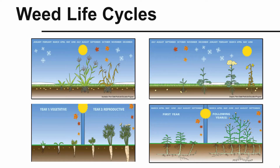So there you have it — the four life cycles of weeds: the summer annual, the winter annual, the biannual, and the perennial. It's worth noting that only broadleaf weeds exhibit the biannual life cycle, while annuals and perennials can be seen in both broadleaf weeds and grasses. I hope that helps you understand the different life cycles of weeds. Please contact us at Professor Society Education if you have any additional questions. Thank you.